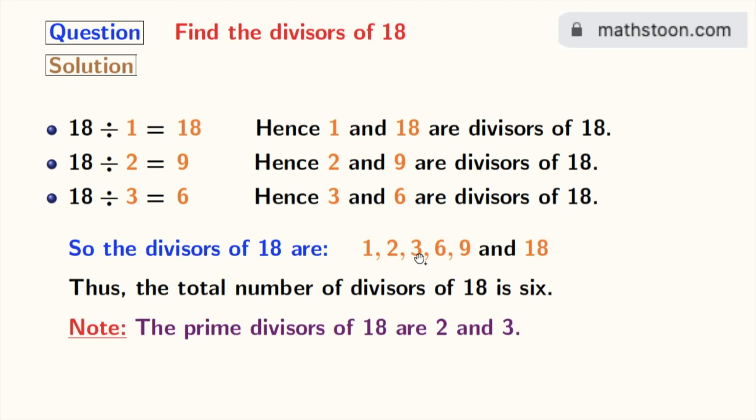So we can say that the prime divisors of 18 are 2 and 3.